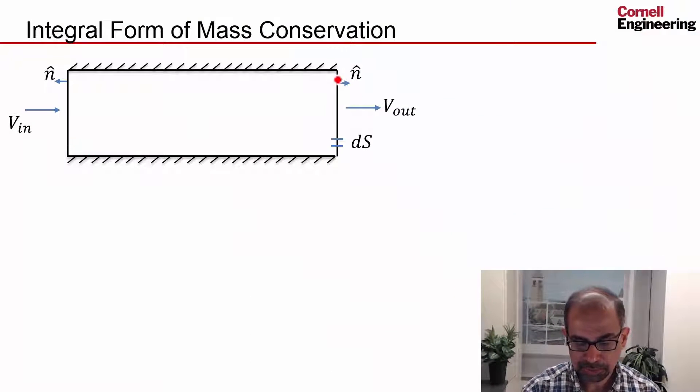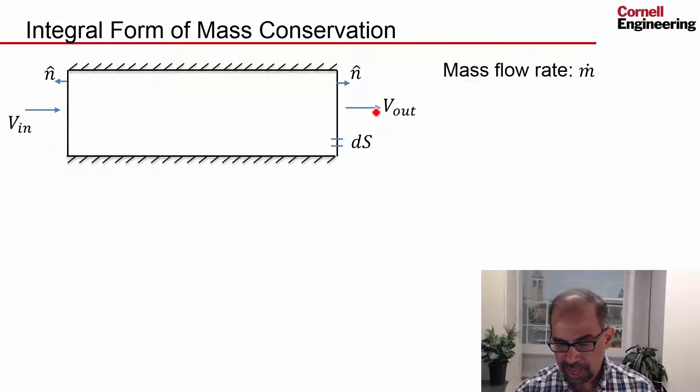I'll go back to the channel flow and I have flow coming in here and flow going out there, and I will denote the mass flow rate crossing any surface as m dot.